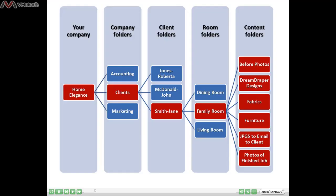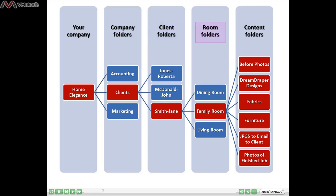In the other Getting Organized lesson, we showed an organizational structure where you would set up your company folder or directory. In this example, the name of our company is Home Elegance. Under that, you would have numerous company folders, maybe for accounting or marketing. The one we're really interested in is the Clients folder, and you might have numerous clients. The one we were interested in was Jane Smith. In this example, Jane hired us to do three of her rooms — the dining room, the family room, and the living room. We're only interested right now in her family room, and we set up those six content folders.